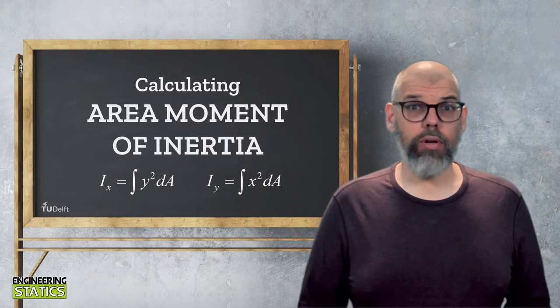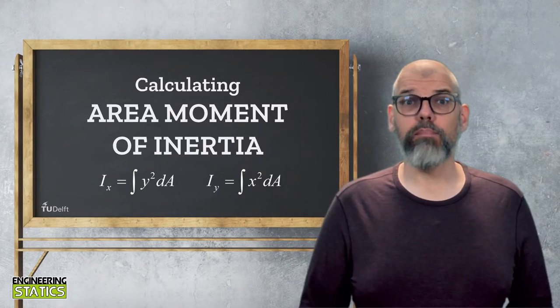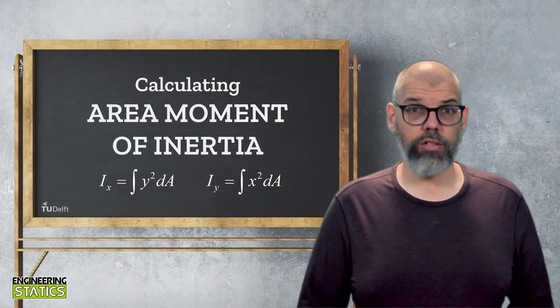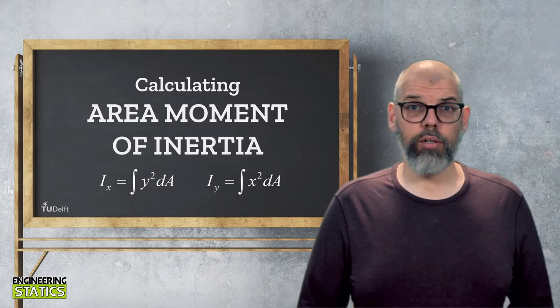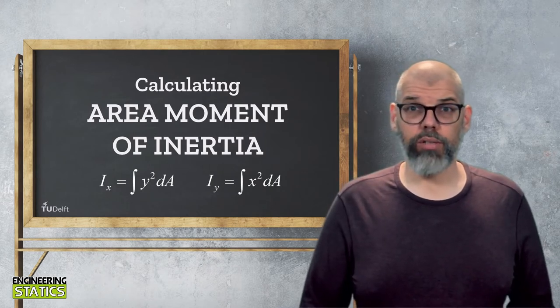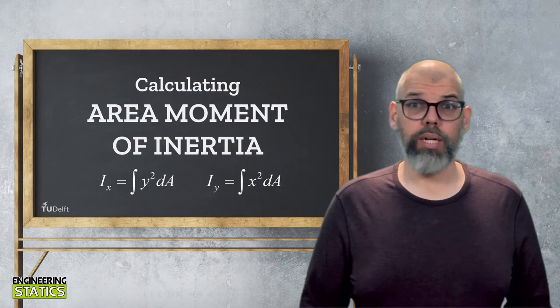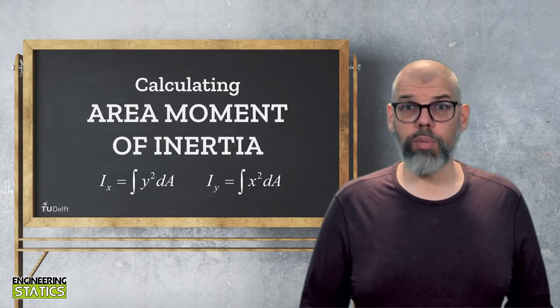Conceptually, we understand that the area moment of inertia represents the bending stiffness of a given cross-sectional geometry about a given axis. But how can we go about calculating it? It is just a mathematical expression, and you could argue that you simply need to evaluate it, and you would be right.